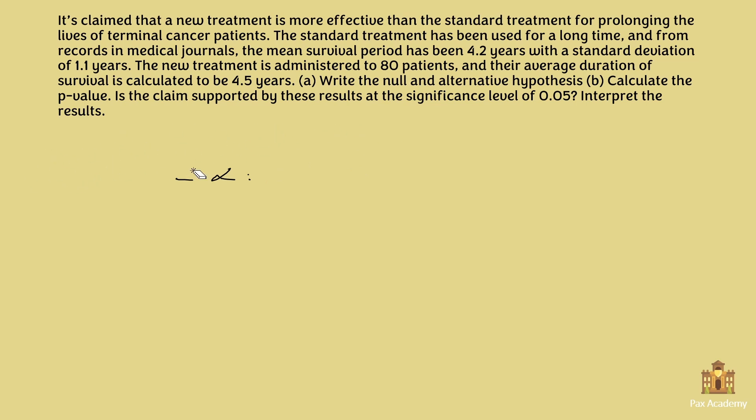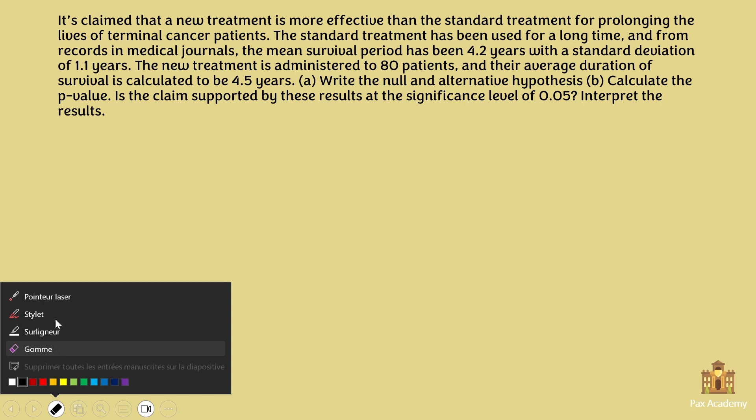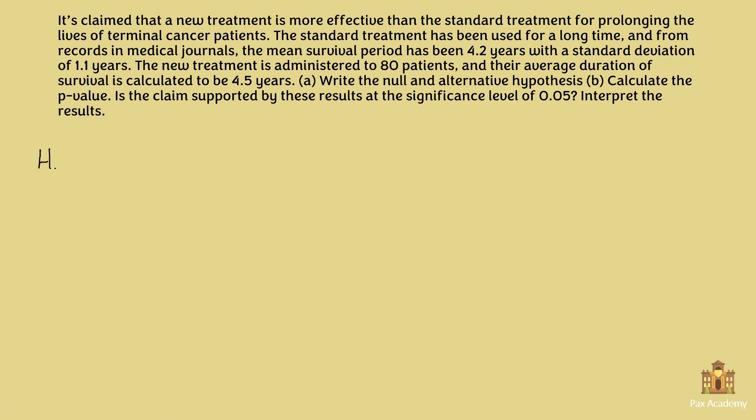Now the next thing to do is to write the null and alternative hypotheses. In this example it says that the standard treatment has been used for a long time and we know that the mean survival period has been 4.2 years. So mu is equal to 4.2 years. And on the other hand, the alternative hypothesis is that it's claimed that a new treatment is more effective than the standard treatment. Therefore mu is higher than 4.2. Because if it's more effective it's going to prolong the lives of terminal cancer patients. Therefore it would be higher than 4.2 years. So those are the null and alternative hypotheses.